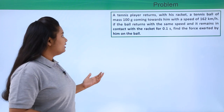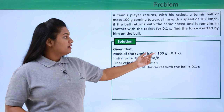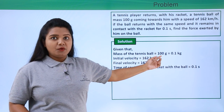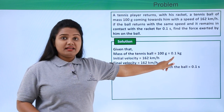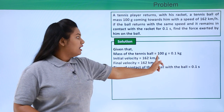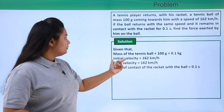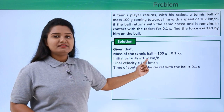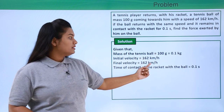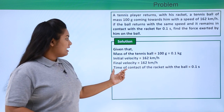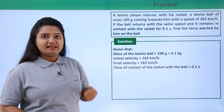Let us list out whatever is given in the question. The mass of the tennis ball is 100 grams, which is not in SI units, so we convert it to kilograms: 100 grams equals 0.1 kg. The initial velocity is 162 kilometers per hour, the final velocity is also 162 kilometers per hour, and the time of contact of the racket with the ball is 0.1 seconds.